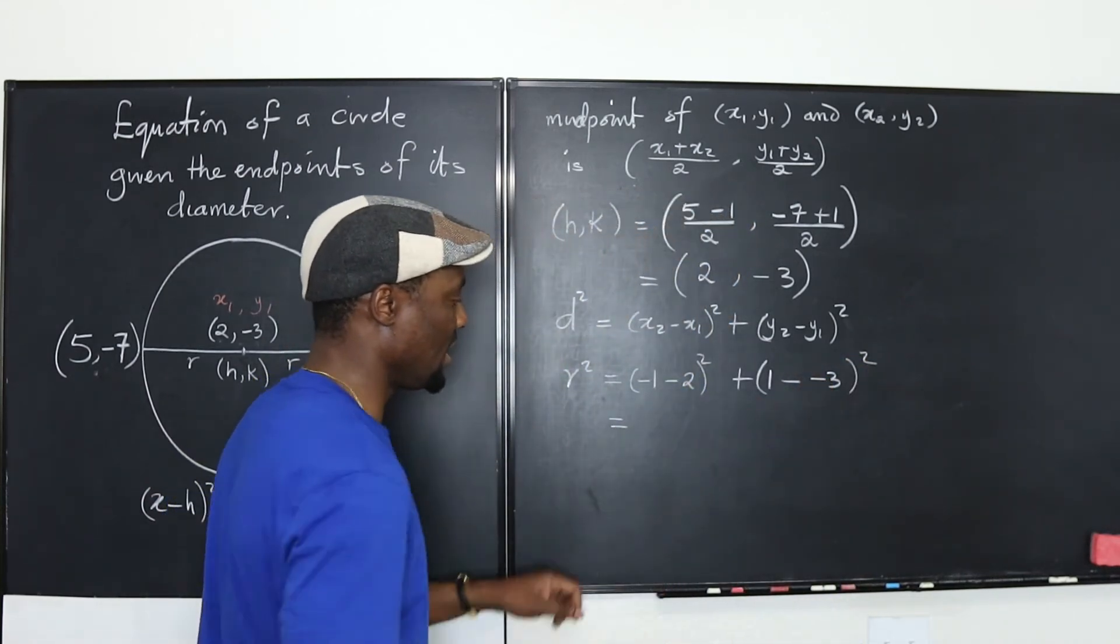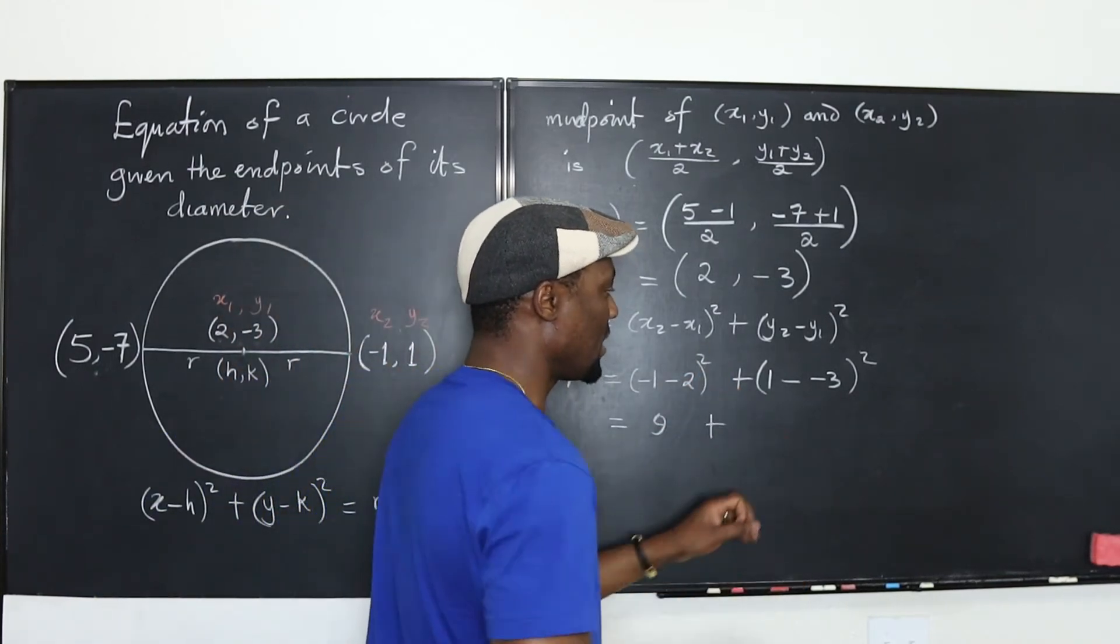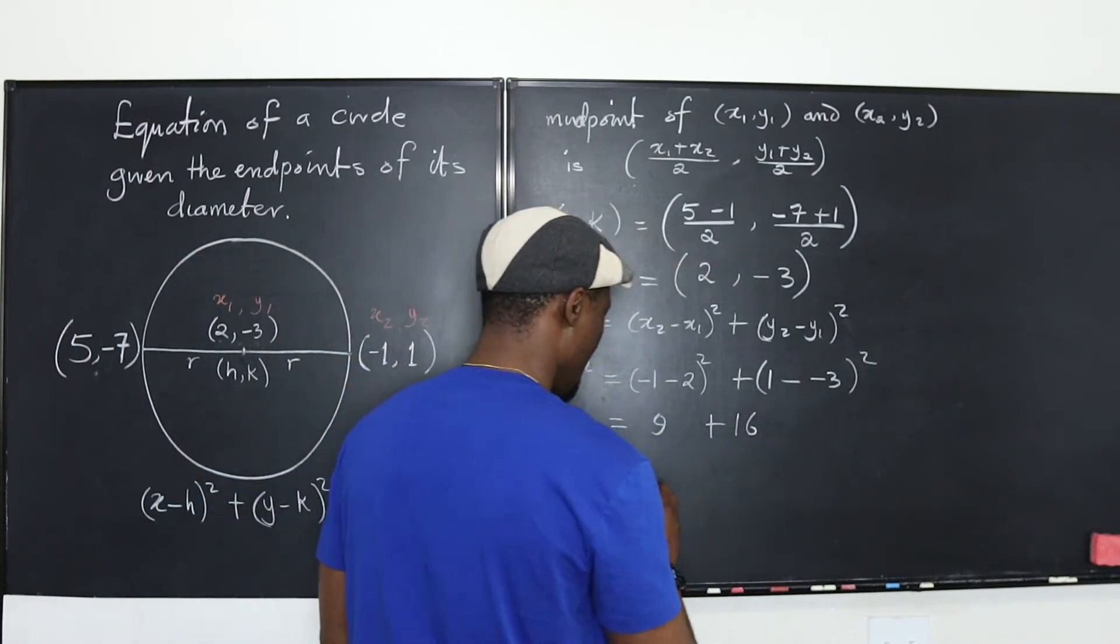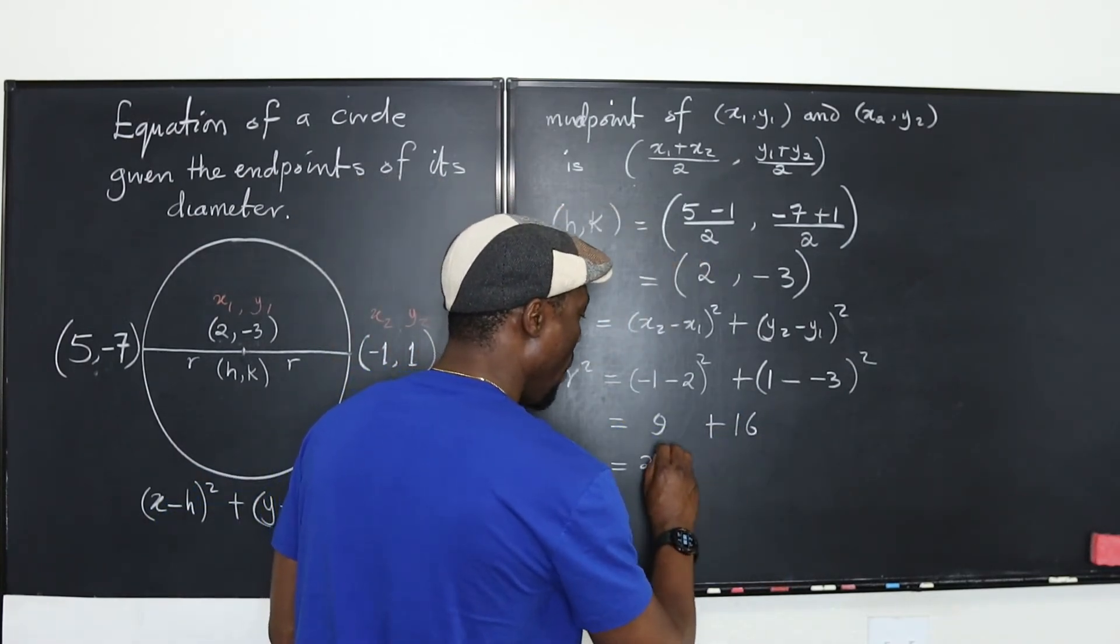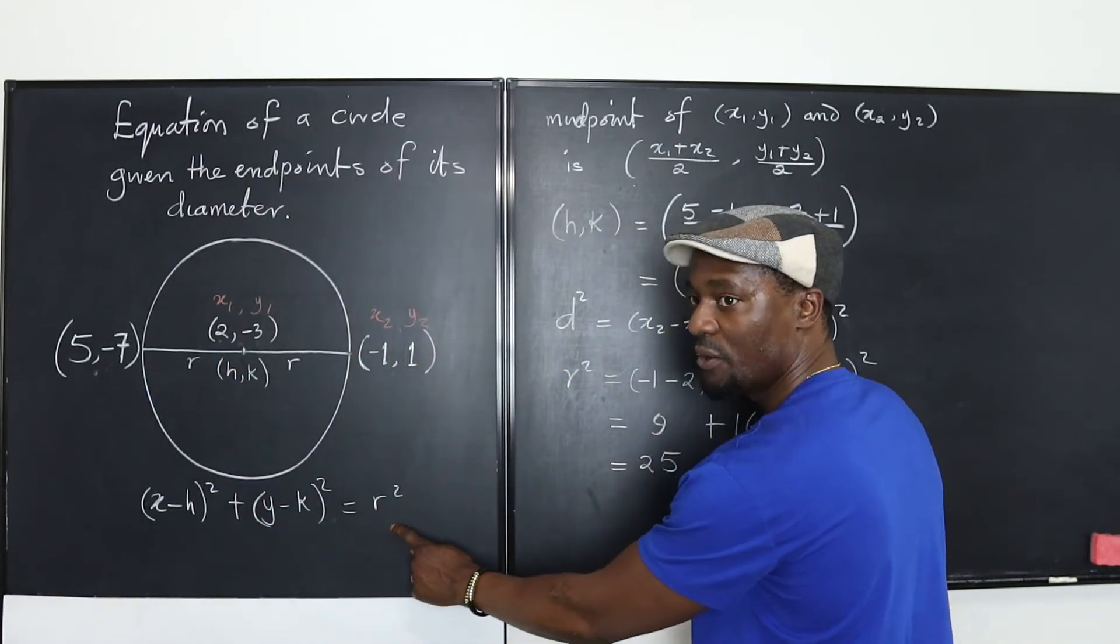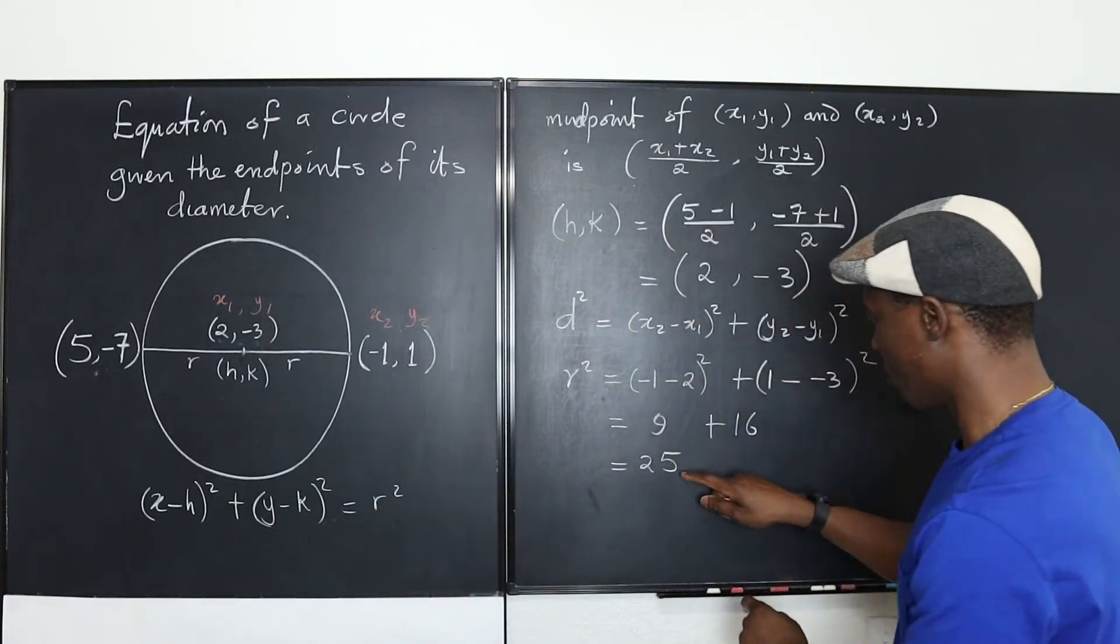So that's what we've got here, squared. Well, as you can see, this is negative 3 squared, which gives you 9 plus, this is 1 plus 3, that's 4, squared is 16. Well, that's going to give you 25. So r squared is 25. And see, this is the equation of a circle. This plus this equals r squared. We already got r squared to be 25. We know what h is. h is 2 and k is negative 3.